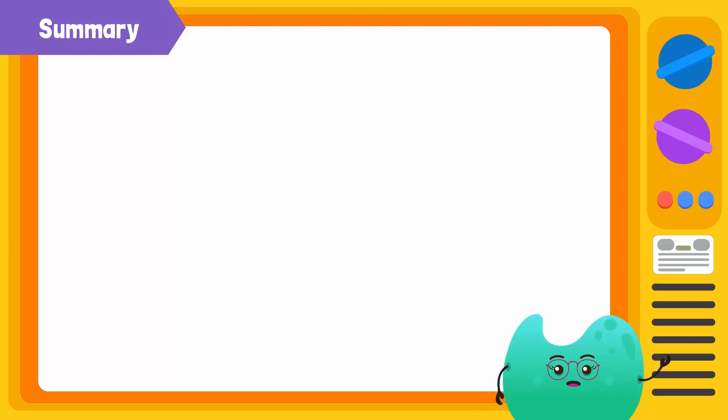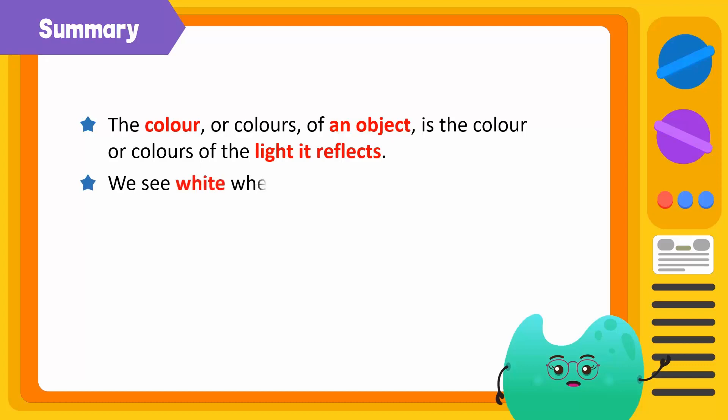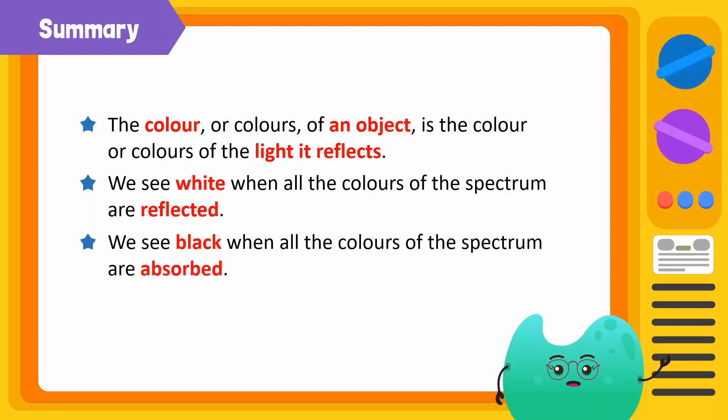Let's summarize what we have learned today. The color or colors of an object is the color or colors of the light it reflects. We see white when all the colors of the spectrum are reflected. We see black when all the colors of the spectrum are absorbed.